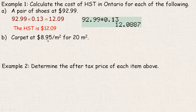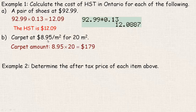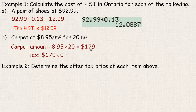Carpet at $8.95 per square meter and you're buying 20 square meters. We have to find the cost of the carpet before we can get any tax. So we take 8.95 and multiply it by 20, because there are 20 lots of $8.95, and that's $179. Then we find the tax on $179 by multiplying by 0.13, and we get $23.27 — that's the amount of tax.